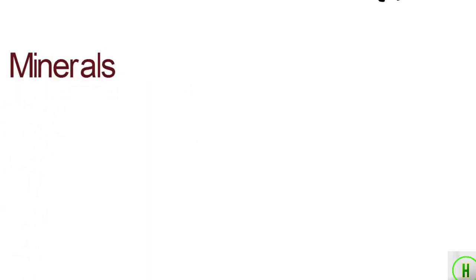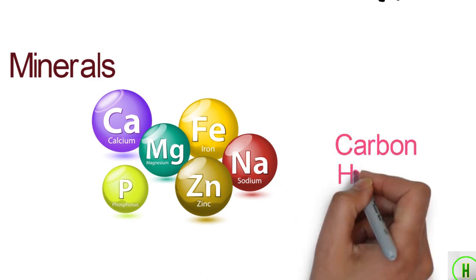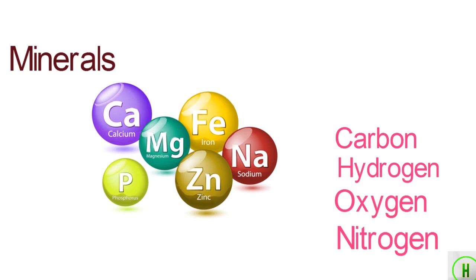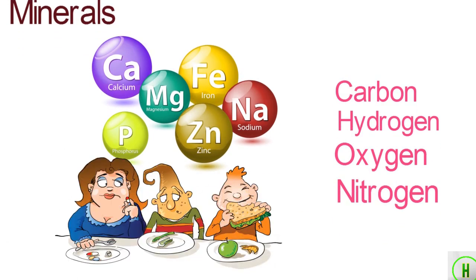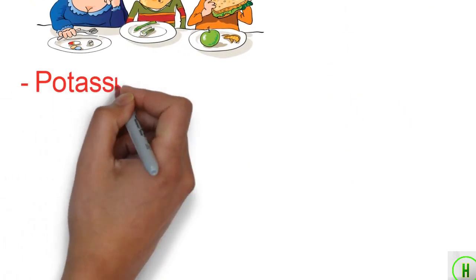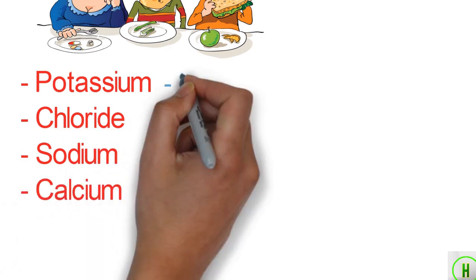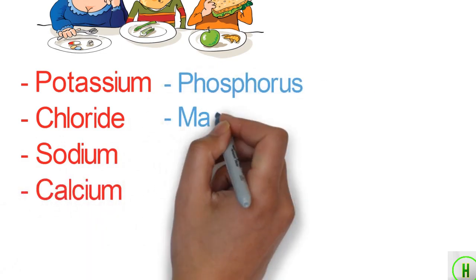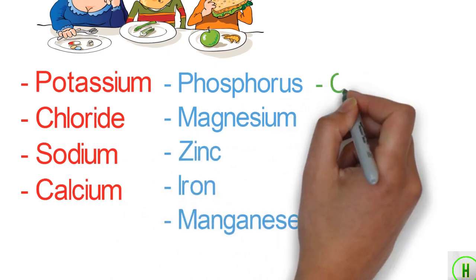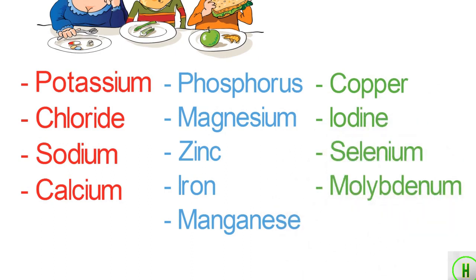Dietary minerals are the other chemical elements our bodies need, other than carbon, hydrogen, oxygen, and nitrogen. People with a well-balanced diet will, in most cases, obtain all the minerals they need from what they eat. These include potassium, chloride, sodium, calcium, phosphorus, magnesium, zinc, iron, manganese, copper, iodine, selenium, and molybdenum.